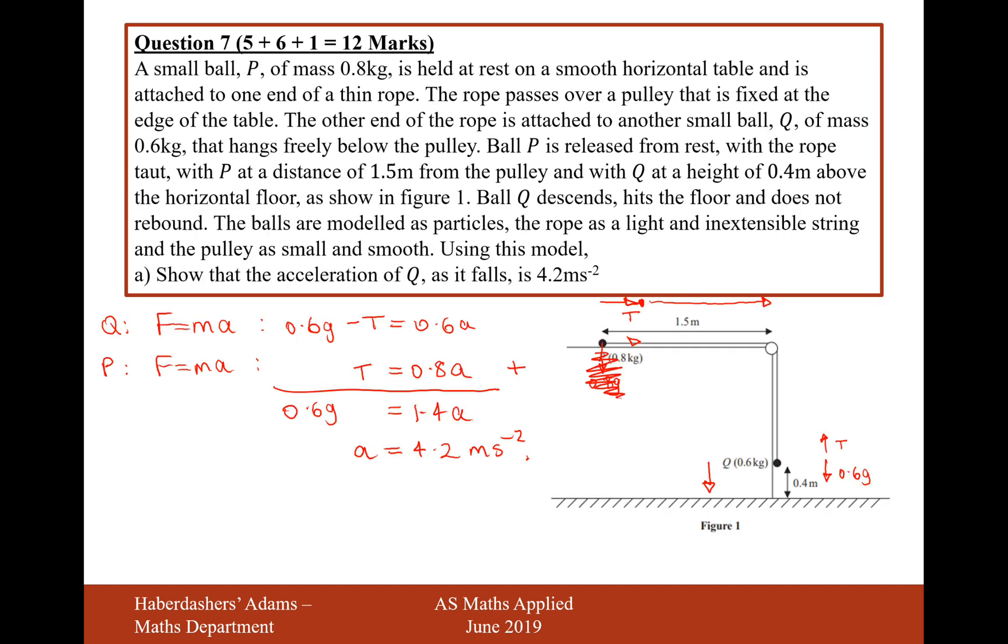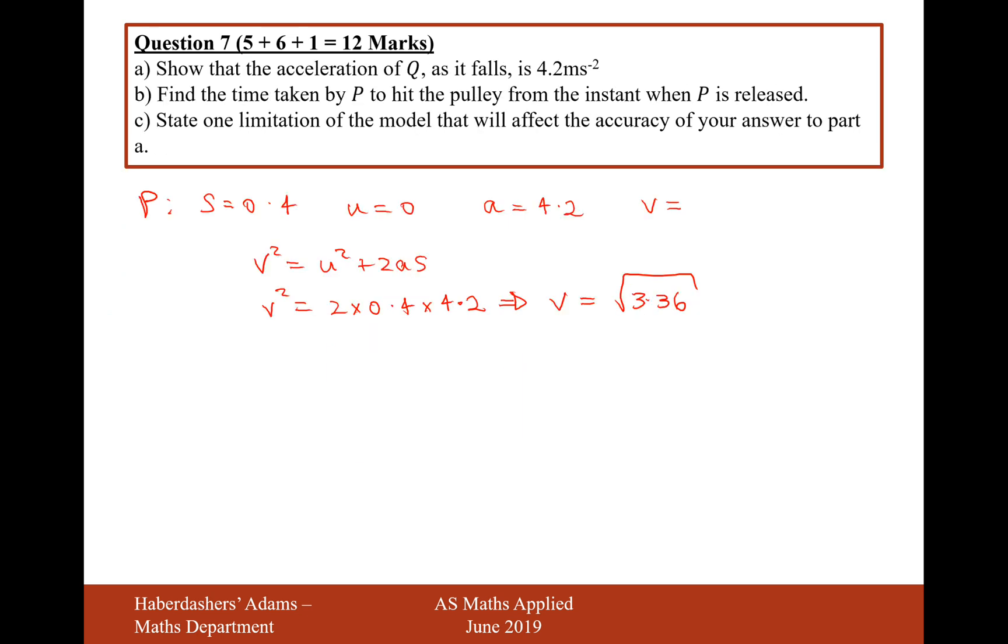So what's happened now is that we've got to this point here where P has picked up some speed from being pulled down by Q. But now that Q's hit the floor, there's not going to be any more tension in the string. The string is going to become loose and then it's just going to carry on with the same speed until it hits the pulley system. It's still got 1.1 more metres to travel.